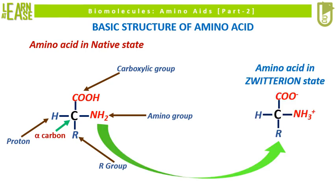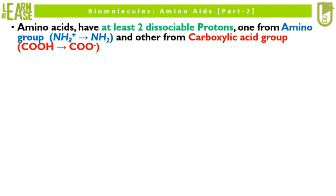The image on the right shows the zwitterion state of amino acid, where the amino group possesses a positive charge and the carboxylic group possesses a negative charge. Amino acids have at least two dissociable protons: one from the amino group, where NH3+ can donate a proton and get converted to NH2, and another from the carboxylic acid group, where COOH can donate a proton and get converted to COO−.